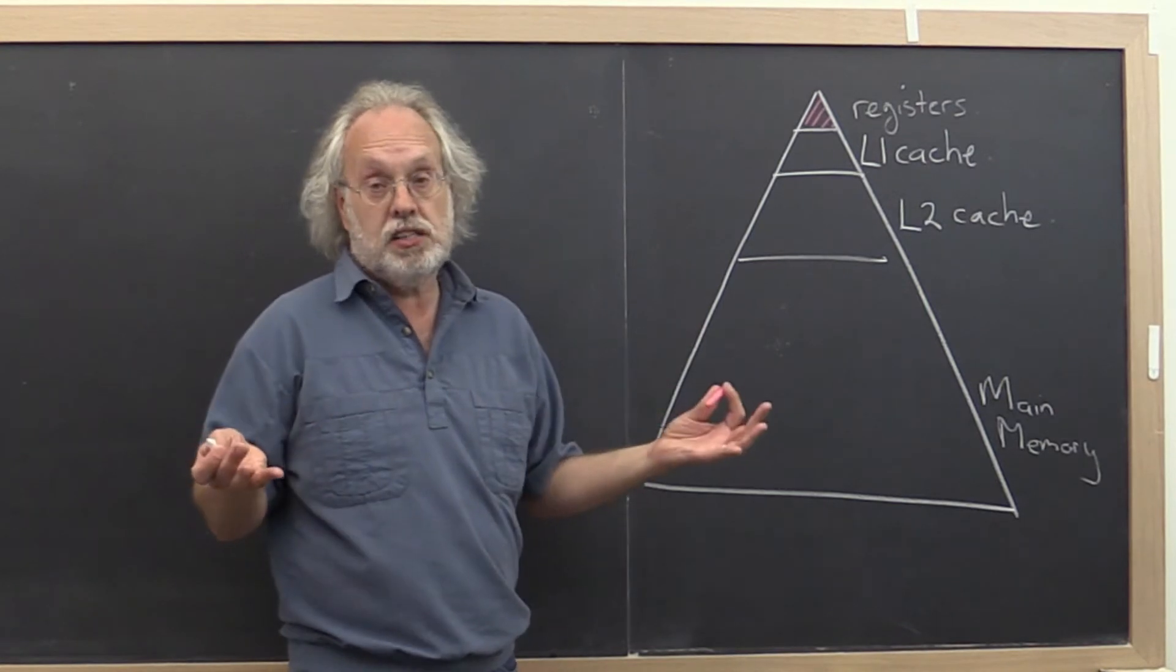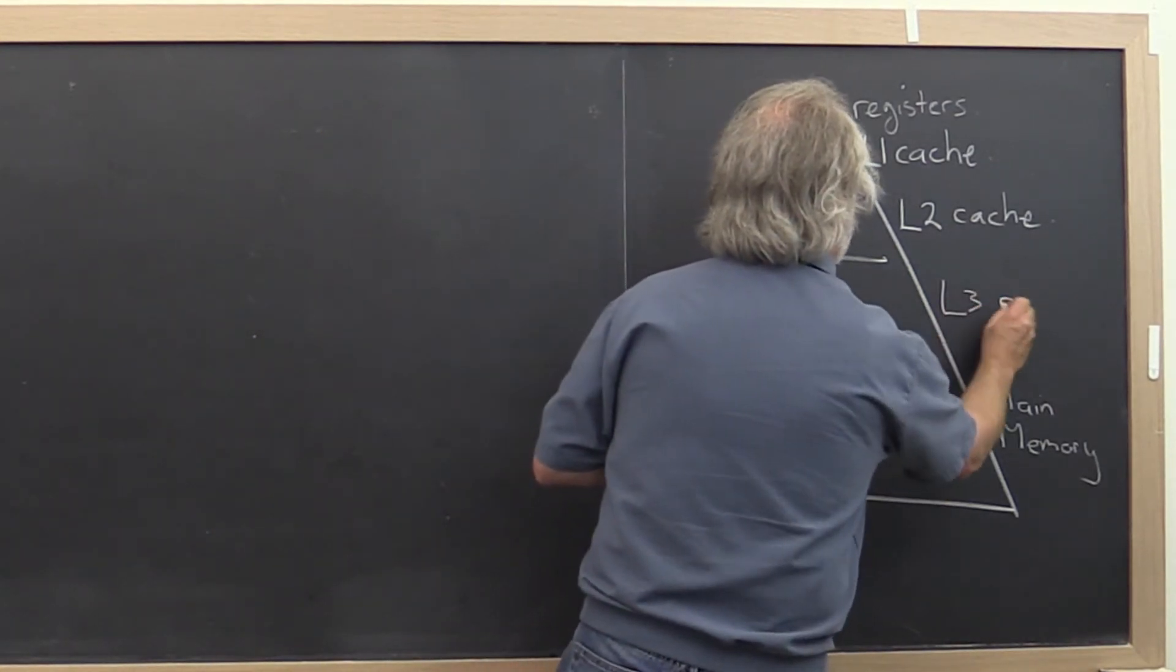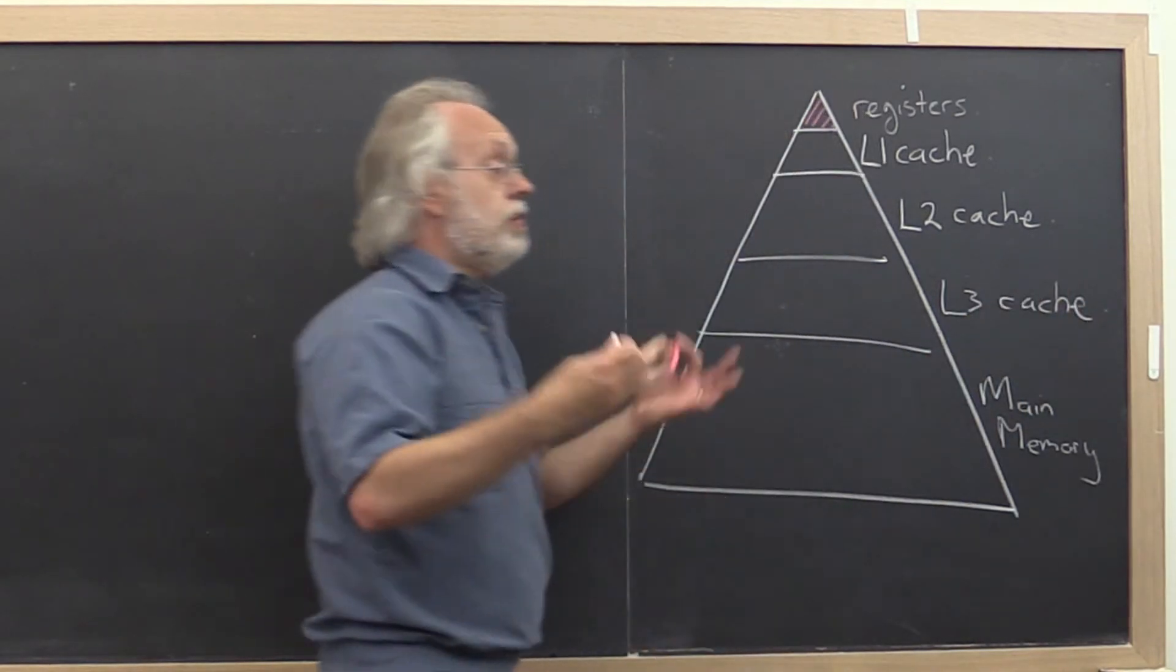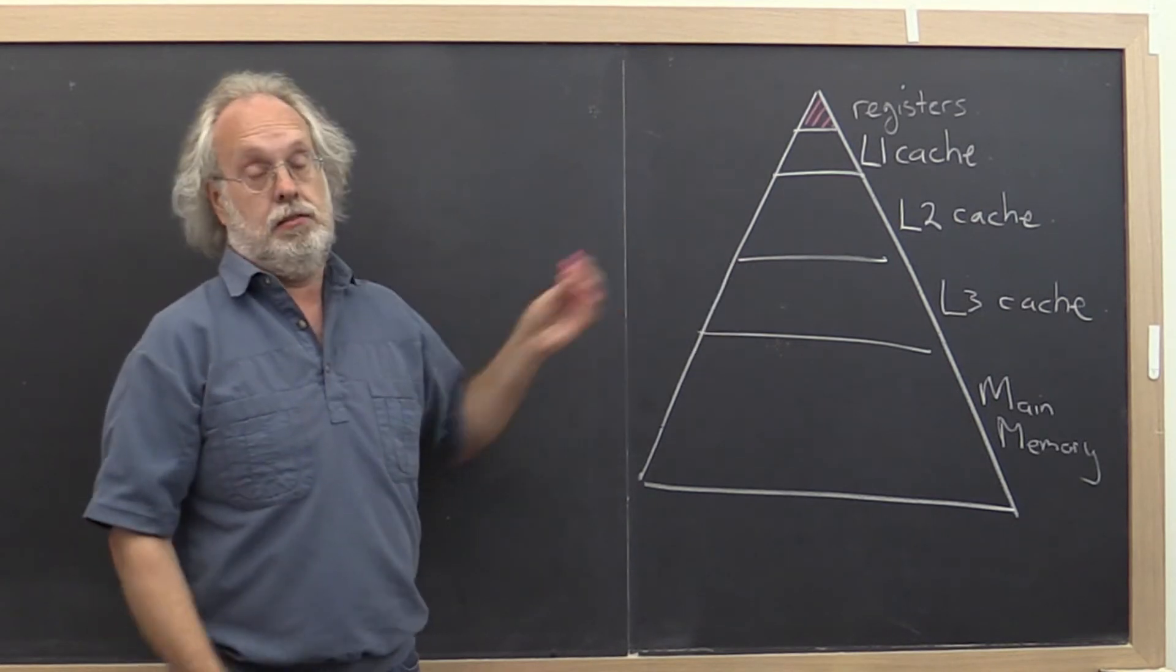What's better than two caches? Three caches. So these days modern architectures have three levels of cache. Even more relatively fast memory.